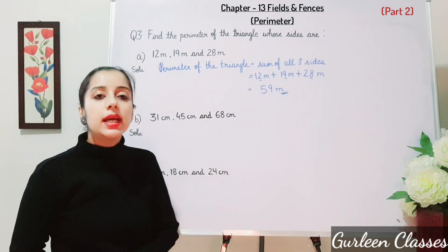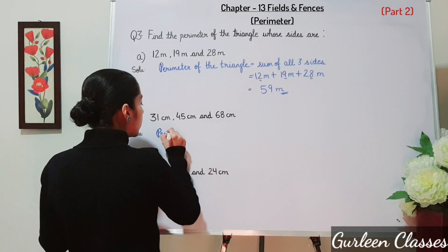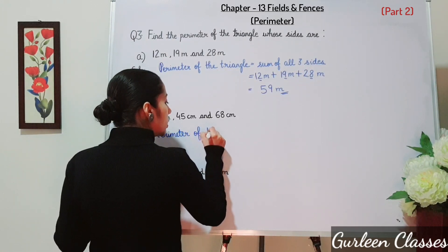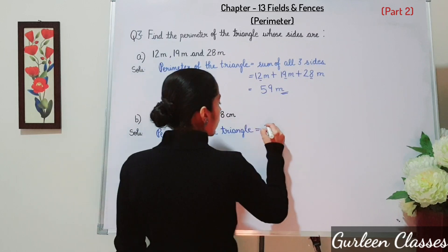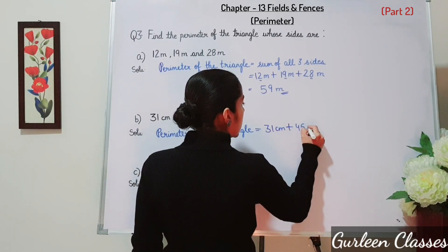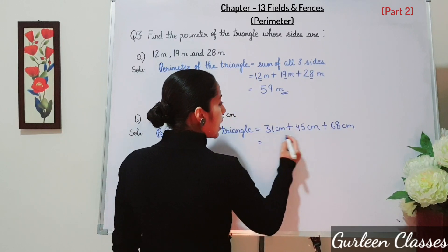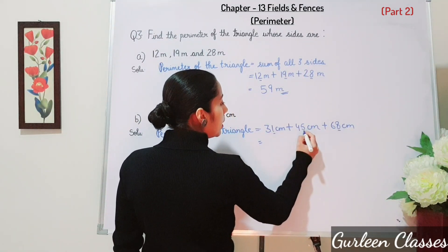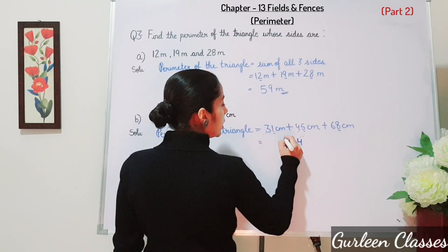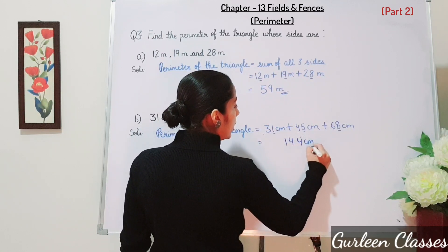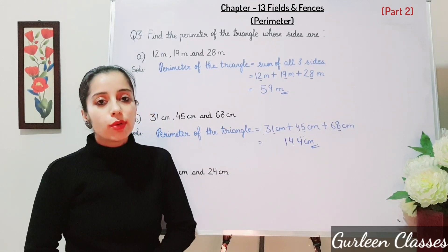Part B — the three sides of a triangle are 31 cm, 45 cm and 68 cm. Perimeter equals 31 plus 45 plus 68, which gives 144 cm. Part C is a homework question with sides 16 cm, 18 cm and 24 cm; you simply add all three sides to find the perimeter.